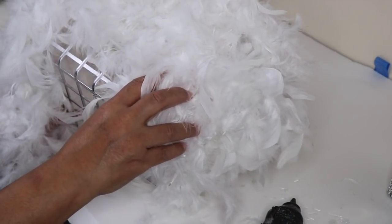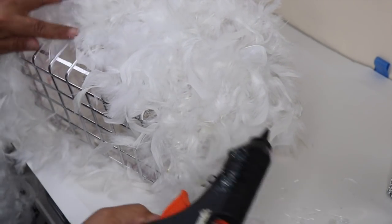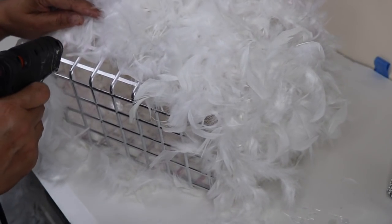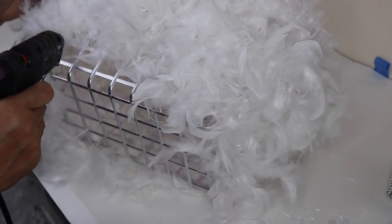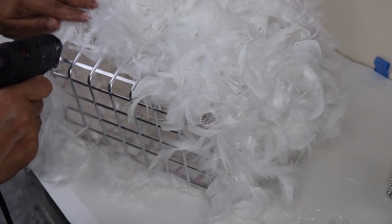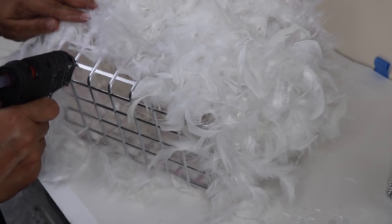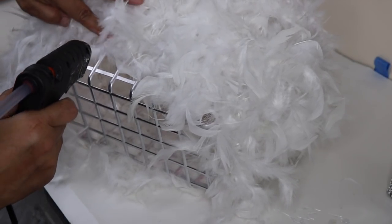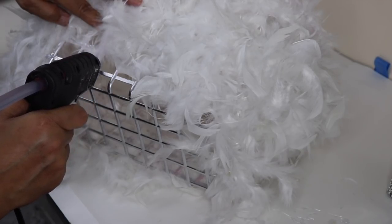To save time I went ahead and covered most of my basket off camera. This is the third and final feather boa. So again, to finish it off you just do the same thing. Put hot glue on the grid and then lightly pat the feathers in place until they dry.